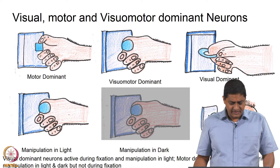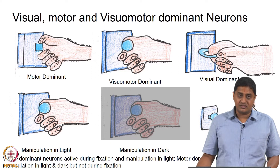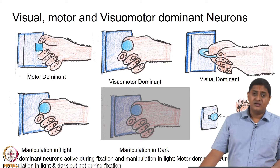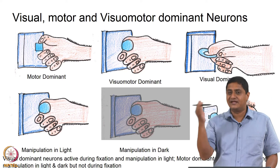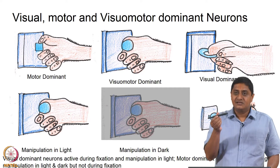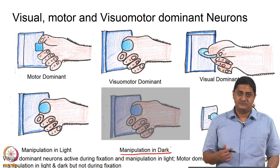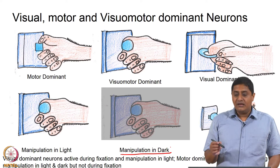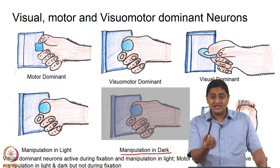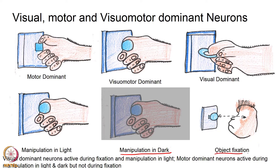Depending on the task and the type of neuron, there are different classes that can be found. There are 3 kinds of tasks we can consider: you can manipulate an object in light — for example, writing with a pen in a lit room; manipulation in dark — where the room is dark and you manipulate the object; and a third possibility is object fixation, where an object is present, you are not touching it, and you are just fixating your eyes on the object — this involves fixation but no real action by the hand.